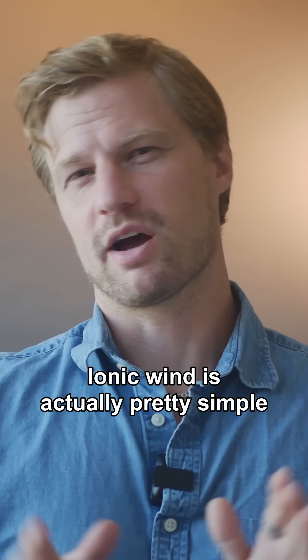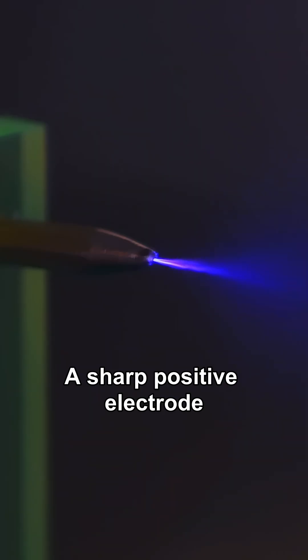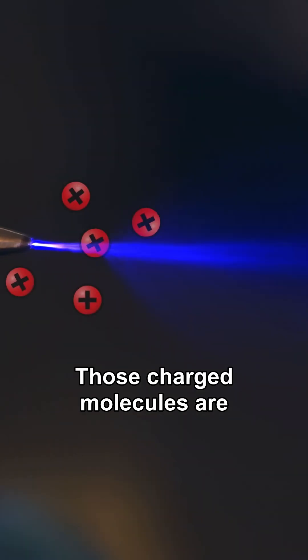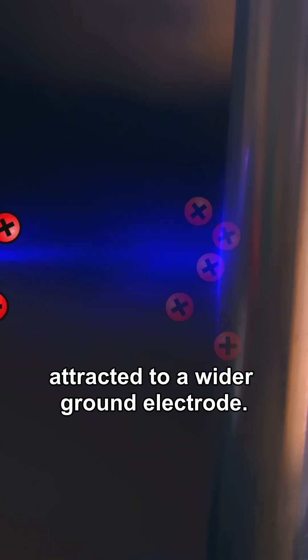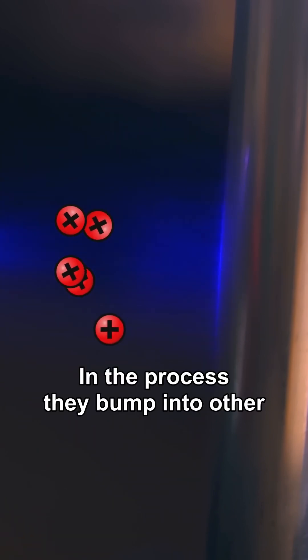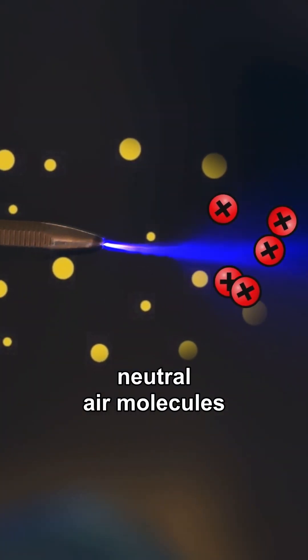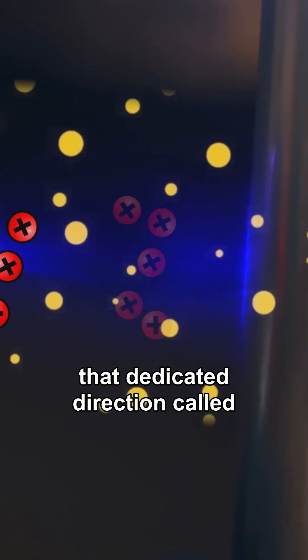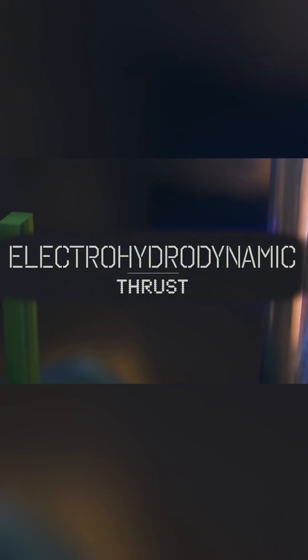Ah, they beat me to it! Ionic wind is actually pretty simple. A sharp positive electrode will ionize the surrounding air molecules. Those charged molecules are then repelled away and attracted to a wider ground electrode. In the process they bump into other neutral air molecules and end up creating a flow of wind in that dedicated direction called electro-hydrodynamic thrust.